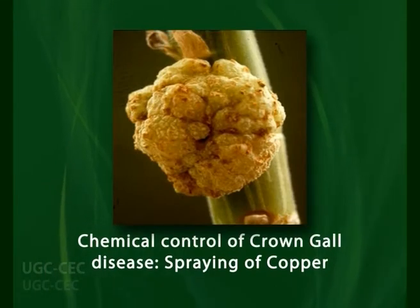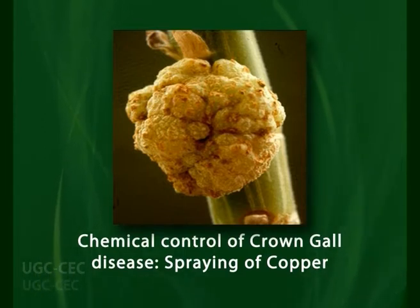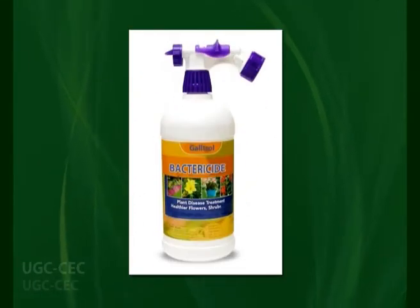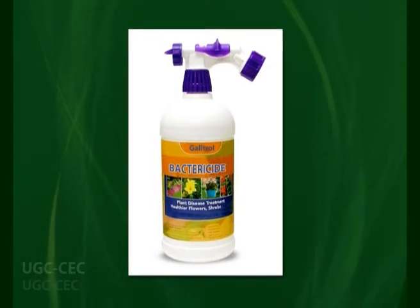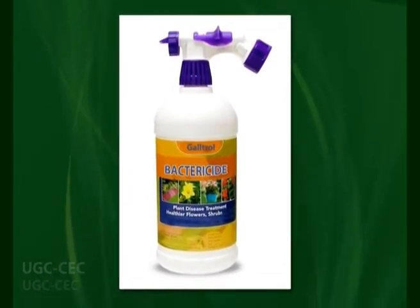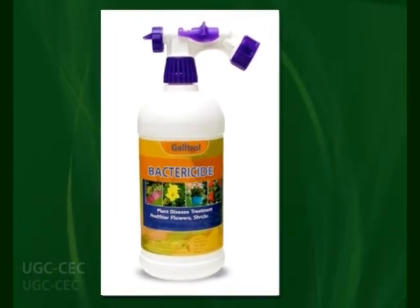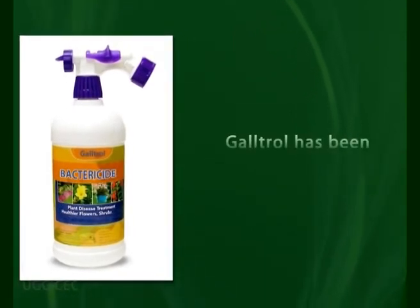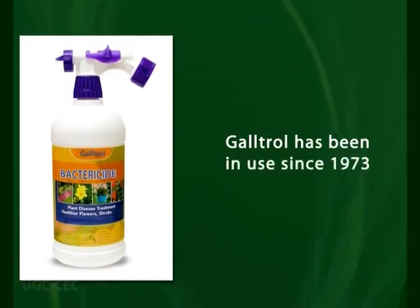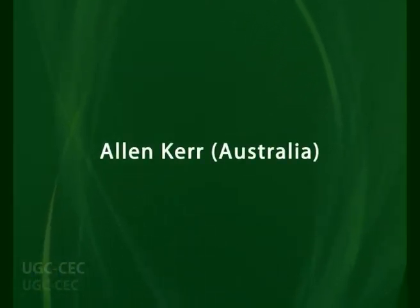Under natural conditions, chemical control of the crown gall disease is achieved through spraying of copper, but this has been discontinued due to its toxicity towards plants. Biological control of the disease is brought about through the use of non-pathogenic Agrobacterium radiobacter, which is sold as Galltrol, and has been in use since 1973. It was discovered by Alan Kerr in Australia.